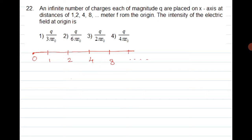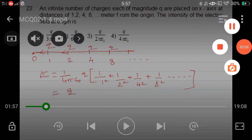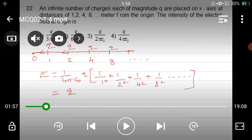The electric field at the origin needs to be found. Each charge is positive with the same value Q at positions 1, 2, 4, 8. The electric field direction is the same, so we use the formula E equals 1 over 4π epsilon not, Q over r squared. Taking Q common, we get 1 upon 1 square plus 1 upon 2 square plus 1 upon 4 square and so on.